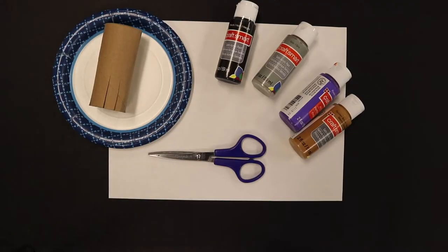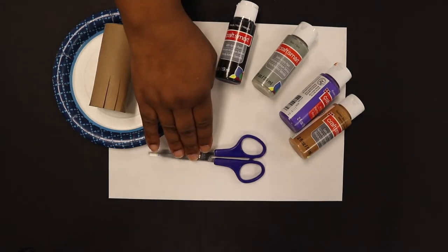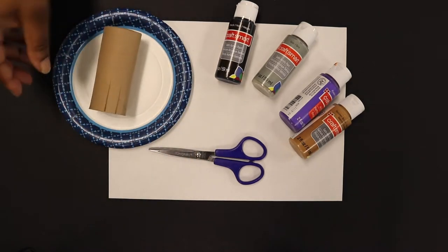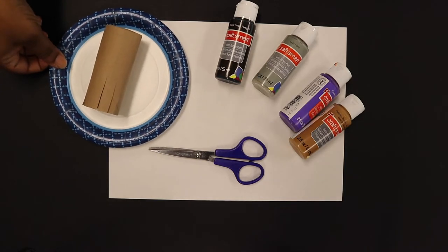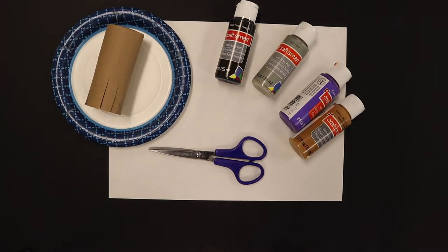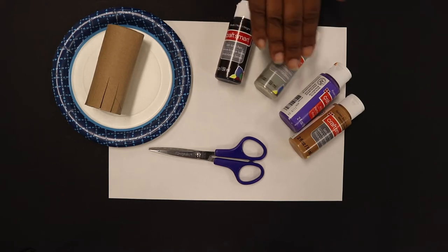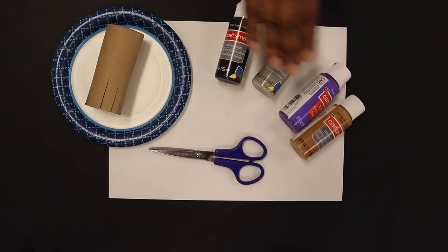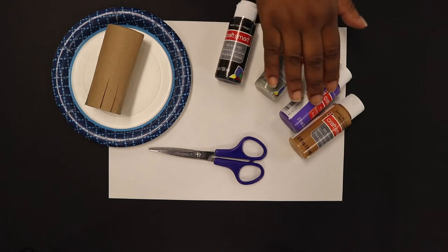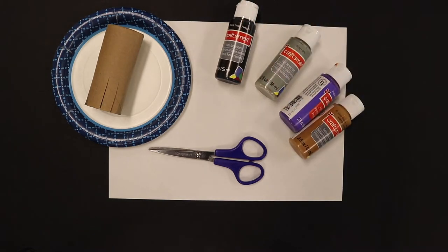For our supplies you'll need construction paper, I have white, scissors, toilet paper roll, paper plate for each color that you will be using. I have my paints right here and any two colors that you choose. I have black, gray, purple, and gold.